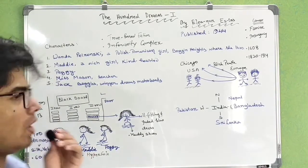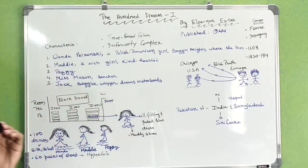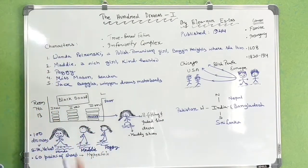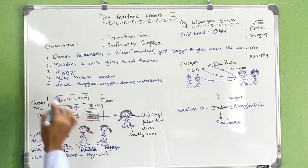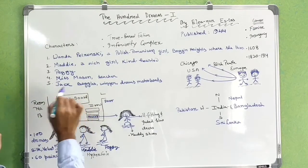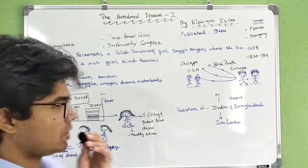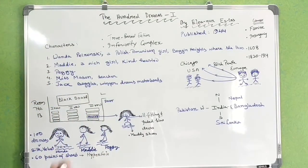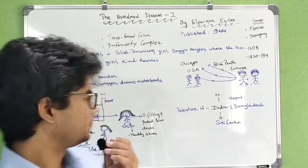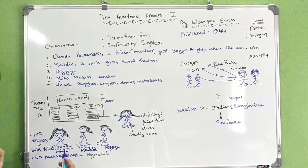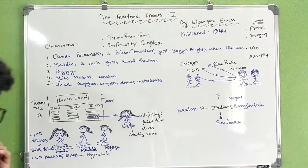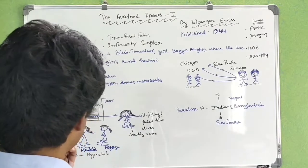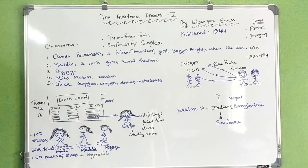Maddy was thought of as the person who would win the first prize for girls, and from boys, Jack Baggles took first position. Jack Baggles drew motorboats, and that was the finest one. Other classmates started admiring Wanda for winning first prize, and Maddy and Peggy were just overwhelmed.